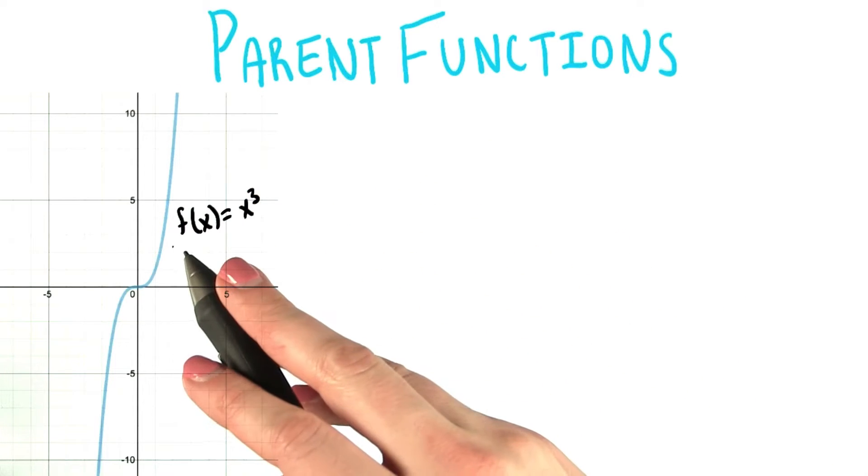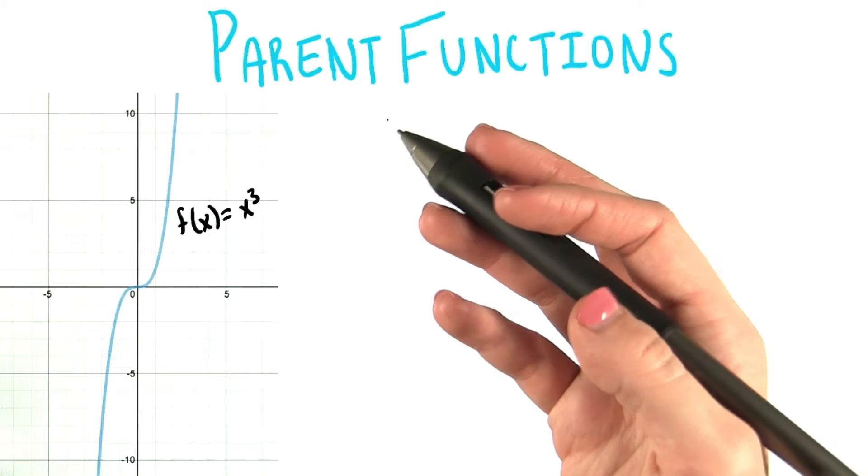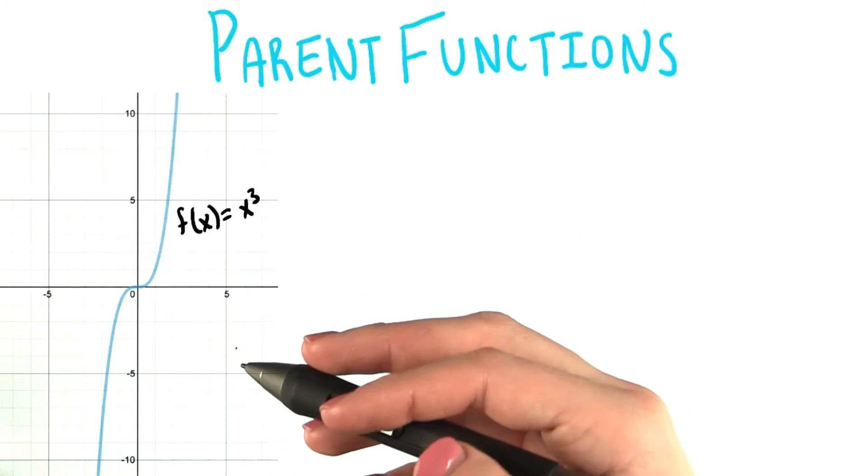Now, as I said in the last quiz, this parent function looks really different from the parent function for quadratic functions. Let's just add that onto our graph so we can compare them more easily.